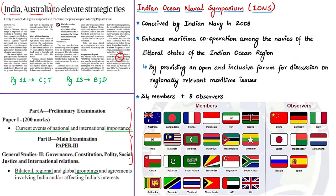Let us see about Indian Ocean Naval Symposium. Symposium literally means a conference or a meeting to discuss a particular subject. When we say Indian Ocean Naval Symposium, it means the conference or meeting of those countries that are present in the Indian Ocean region. This idea was conceived by the Indian Navy in the year 2008 and now we are in the 11th year. This forum basically aims to enhance the maritime cooperation between the navies of different countries present in the Indian Ocean region.